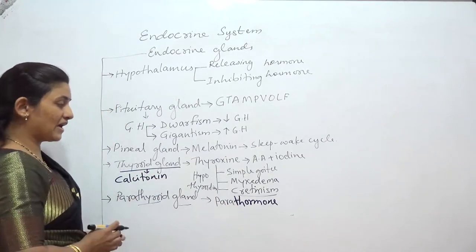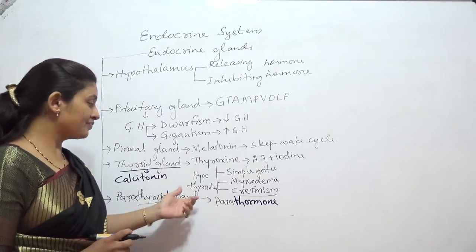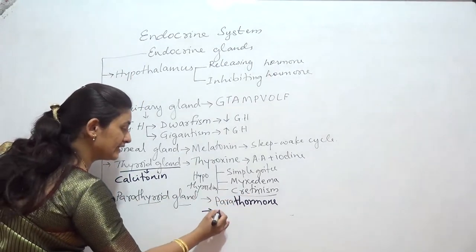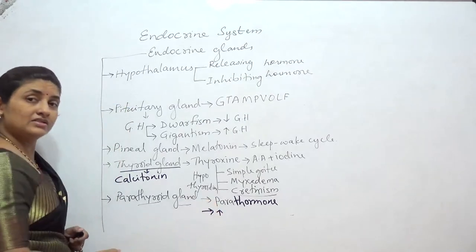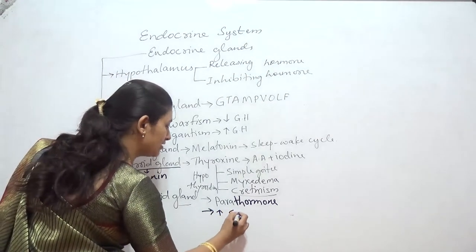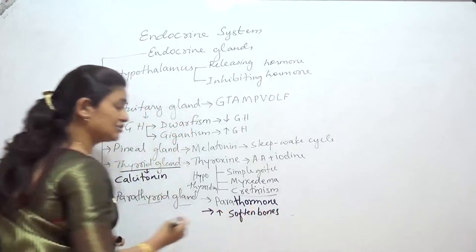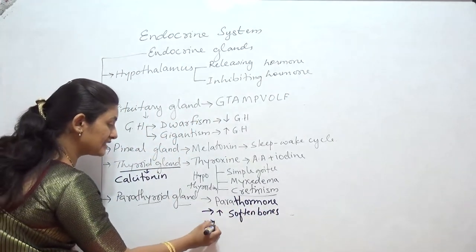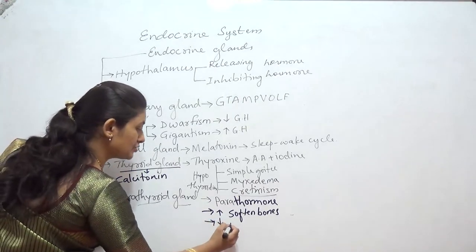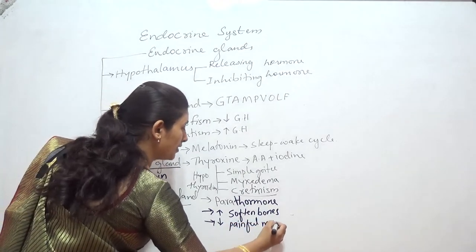Parathormone, secreted by the parathyroid gland, also regulates the blood calcium level. If its secretion is increased, it softens the bones by removing calcium from them. If its secretion is decreased, it results in painful muscle cramps.